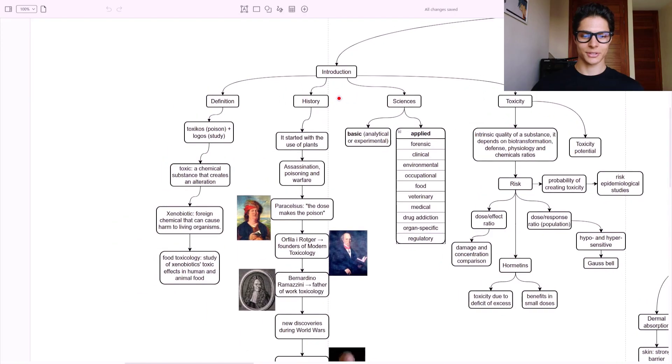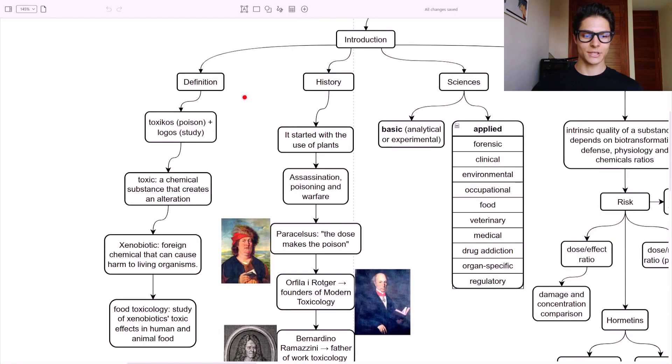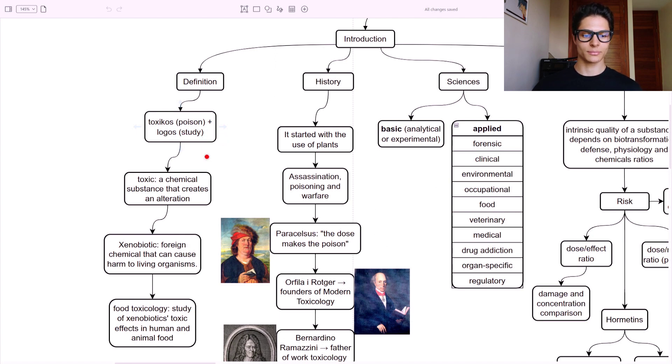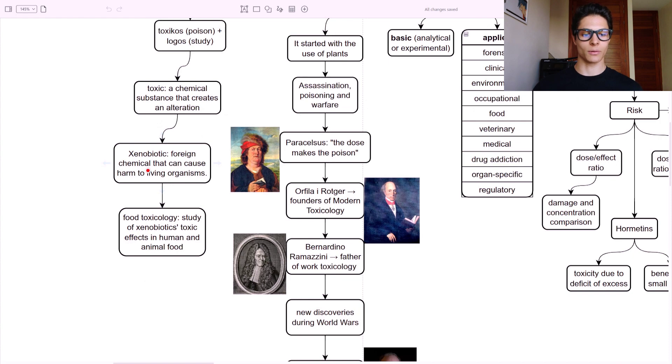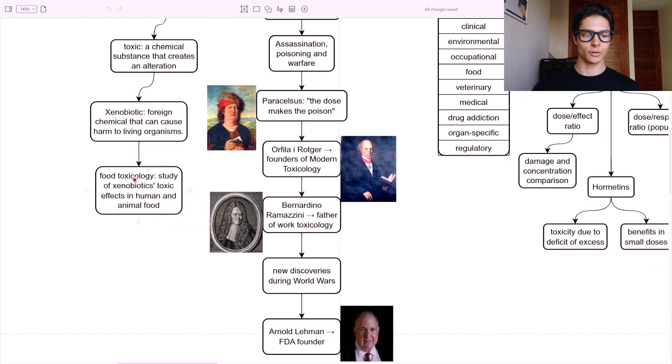Let's begin by talking about the history of toxicology. As an introduction, we have the definition. Toxicology comes from toxicos, which means poison, and logos, which means study. So it is the study of poisons. A toxic is a chemical substance that creates an alteration in a living organism. A xenobiotic is a foreign chemical that can cause harm to a living organism. It is something that we do not produce in our bodies. Toxicology is the study of xenobiotic toxic effects in humans and also animals.